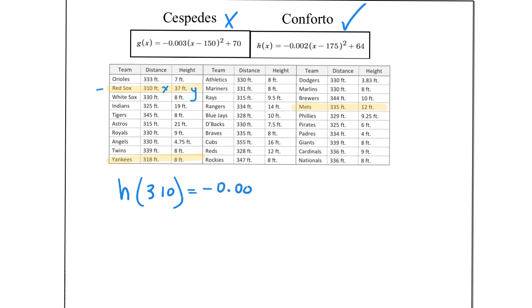So basically, I'm going to plug in 310 to Conforto's function. I'm algebraically going to show how this is done. We're basically testing, will it clear that 37-foot wall? Where will his ball be hit at 310 feet? Or how high will it be in the air at 310 feet horizontally?